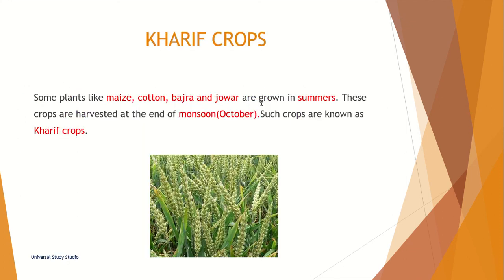So now let's learn about the Kharif crops. Some plants like maize, cotton, badra, and jawar are grown in summers. These crops are harvested at the end of monsoon, meaning October. Such crops are known as Kharif crops.